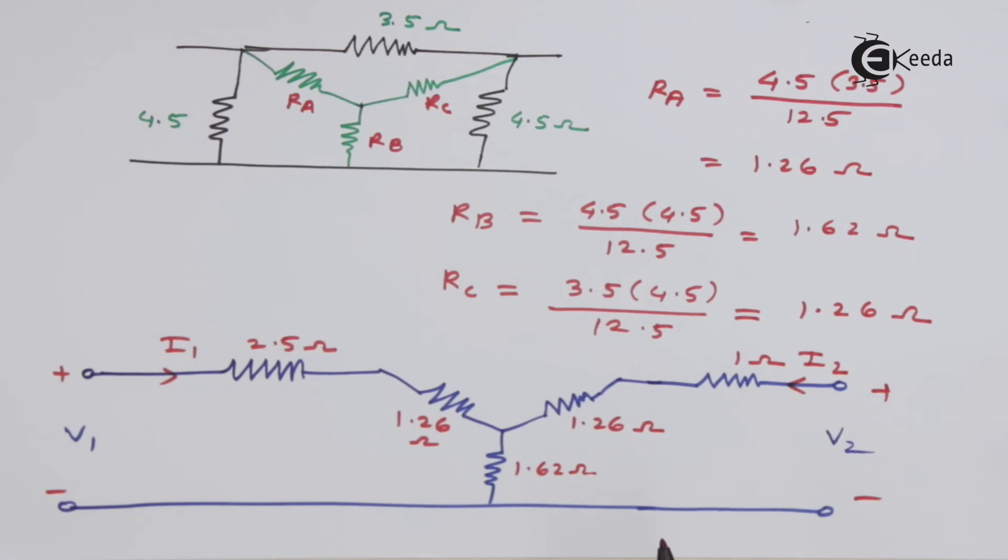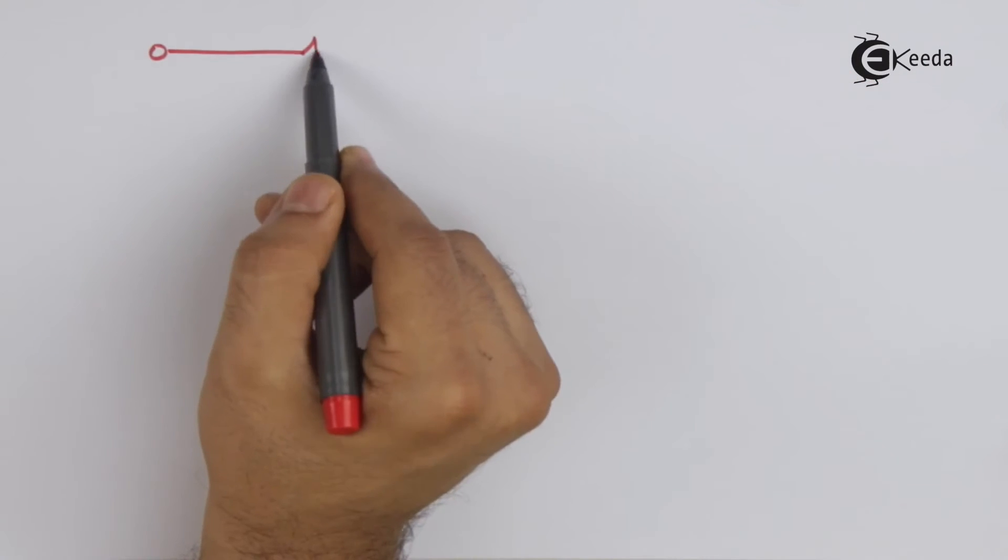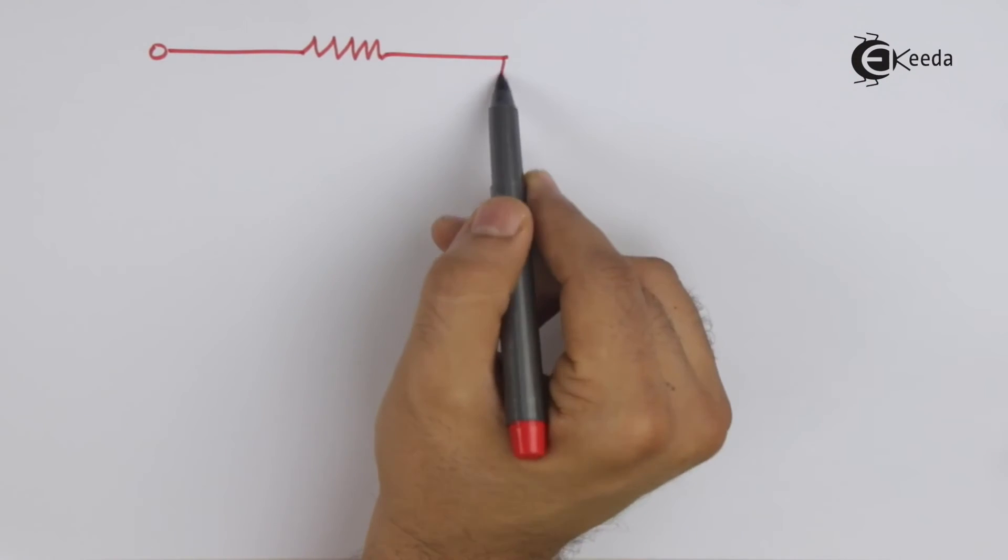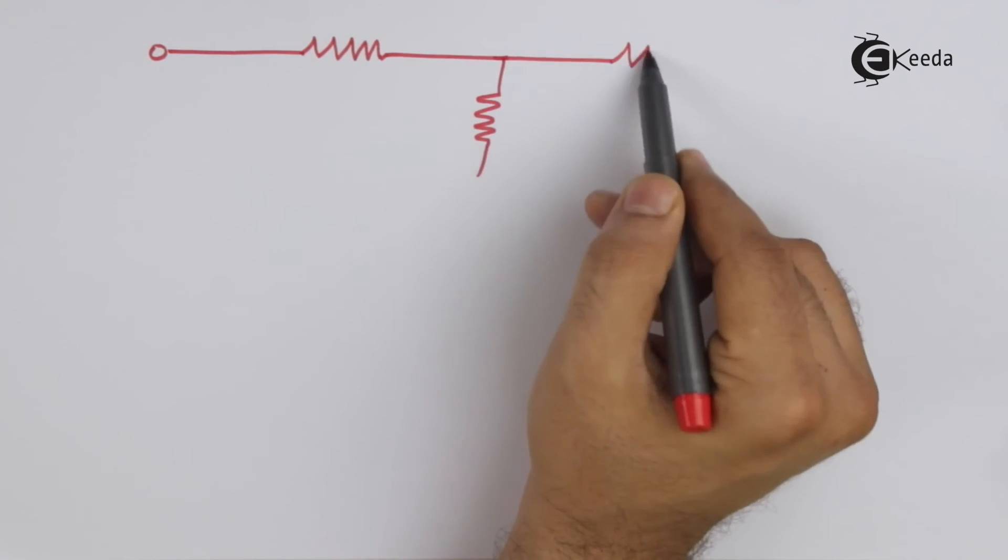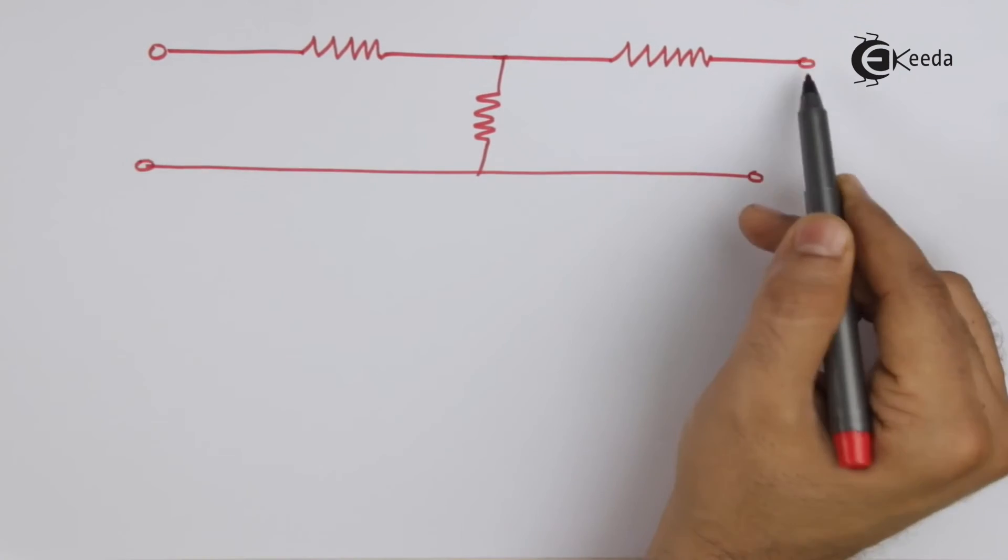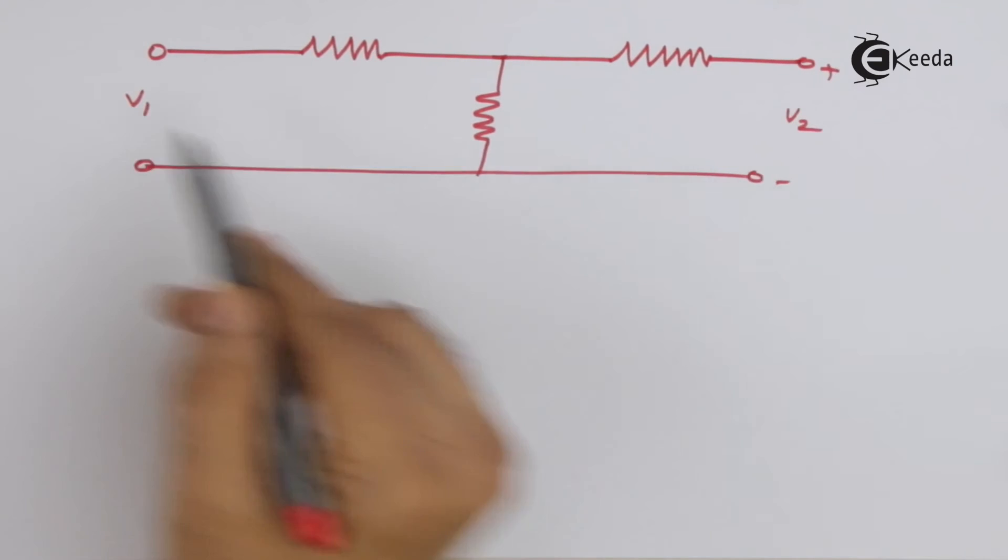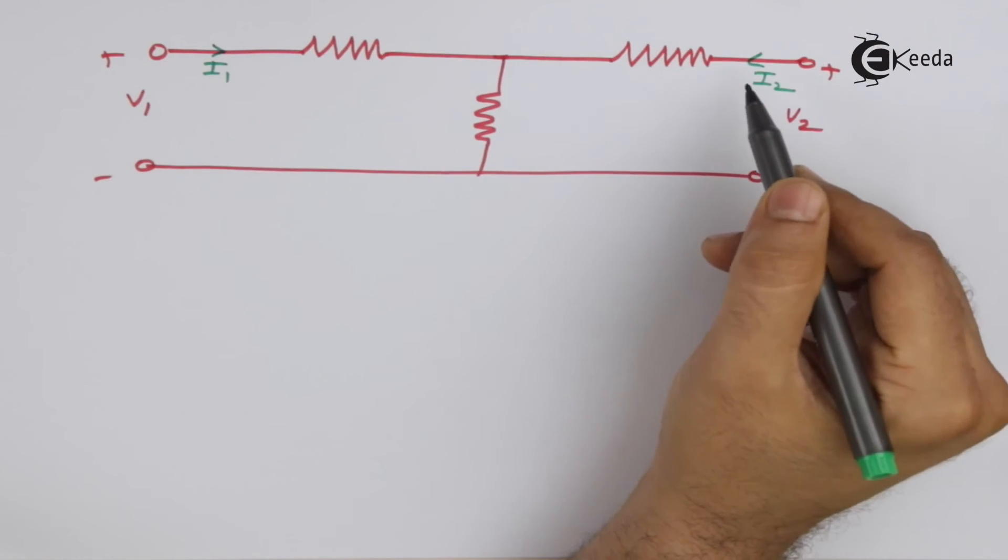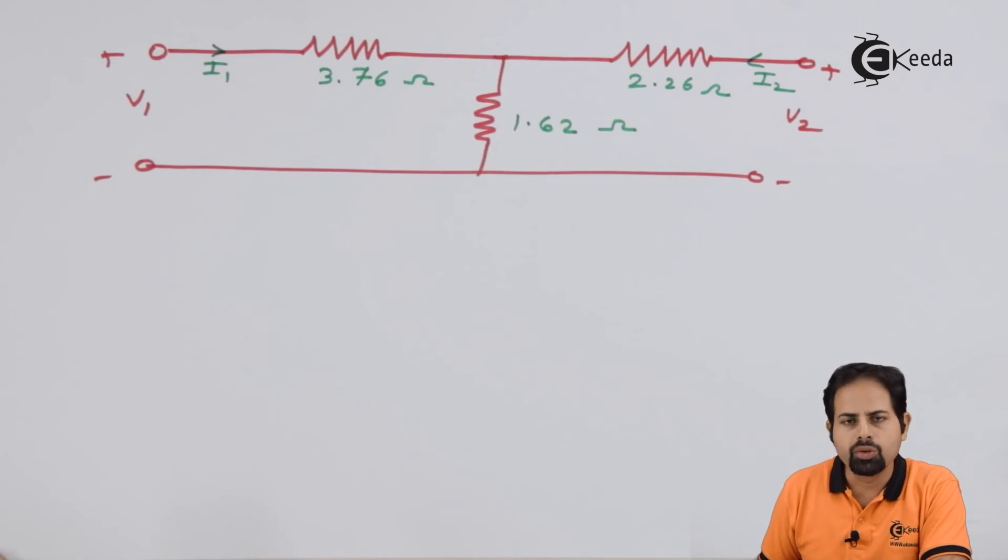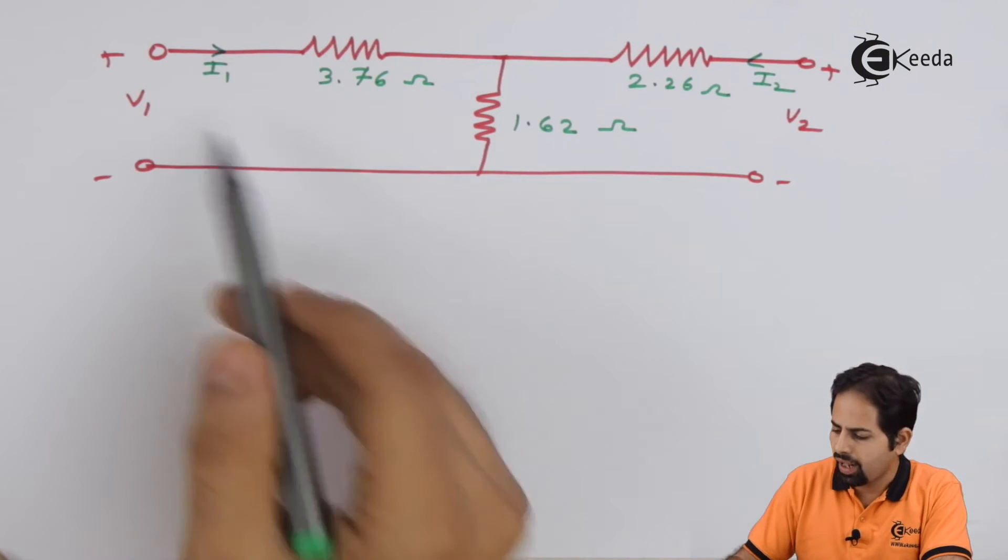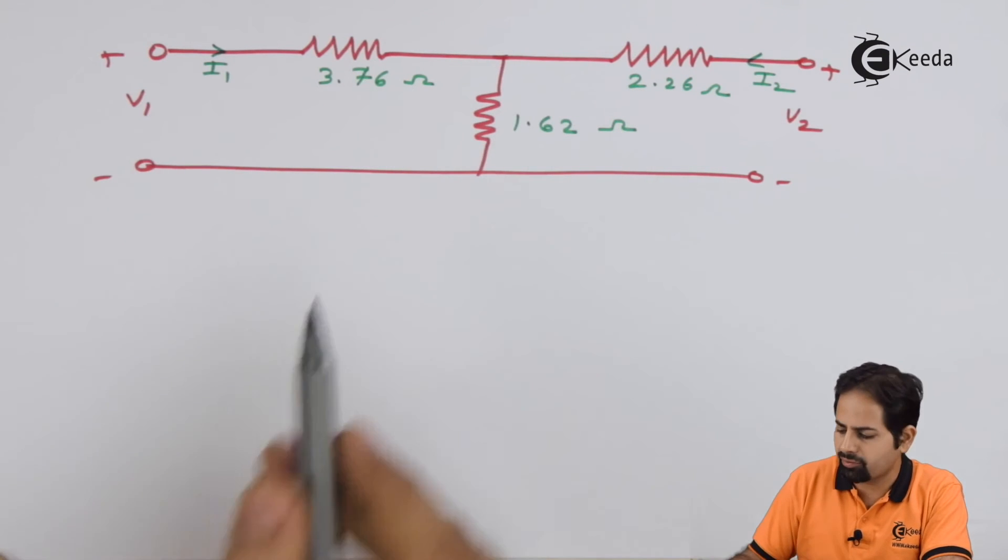Now by this star, our circuit gets simplified. So now we can add these two resistances and these two also, and it becomes a T network. So here 2.5 plus 1.26 will come and 1.26 plus 1 will come here. So this is our new circuit or a simplified circuit, and because it is in T shape, it is called as a T network.